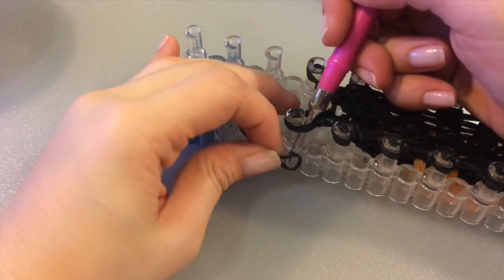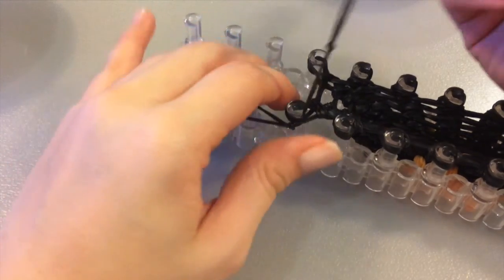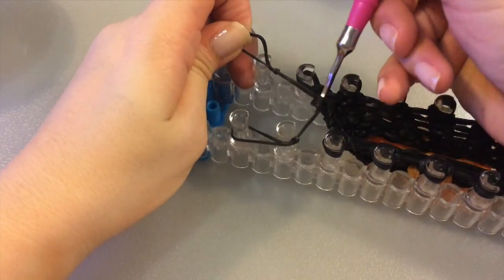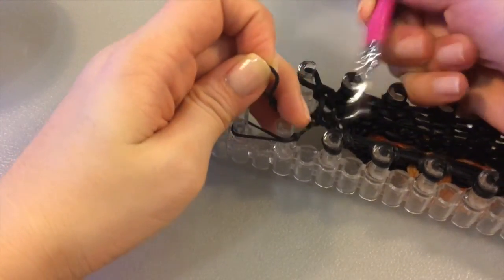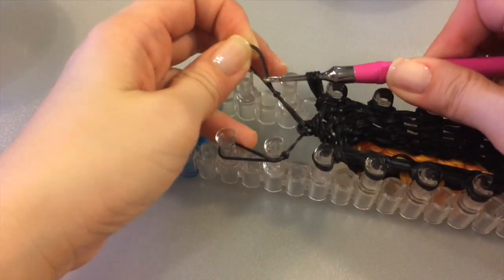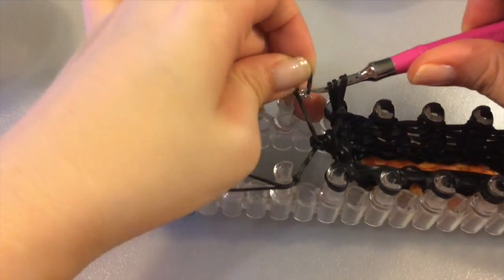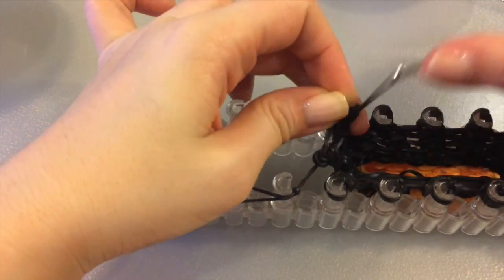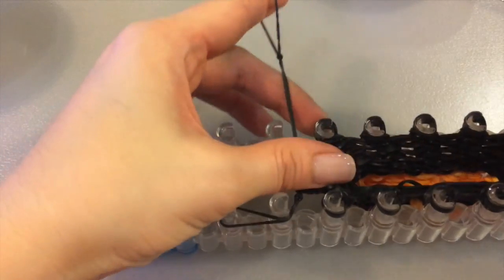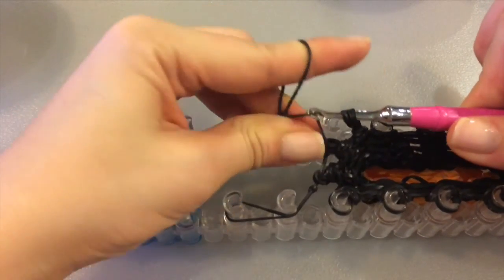Put your hook through the first peg. Pull your tying band through. And just go through every single peg and tie it all up.